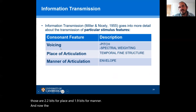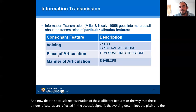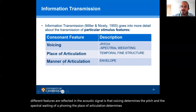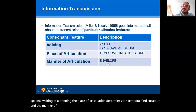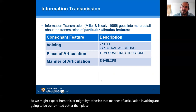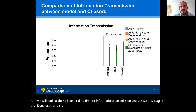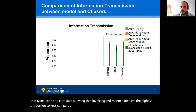The acoustic representation of these different features: voicing determines the pitch and spectral weighting of a phoneme, place of articulation determines the temporal fine structure, and manner of articulation determines the envelope. We might hypothesize that manner of articulation and voicing are going to be transmitted better than place of articulation. Looking at the CI listener data from Donaldson and Kraft, voicing and manner are at the highest proportion correct compared to place, which has a much lower proportion correct.